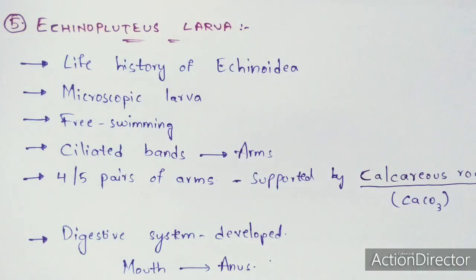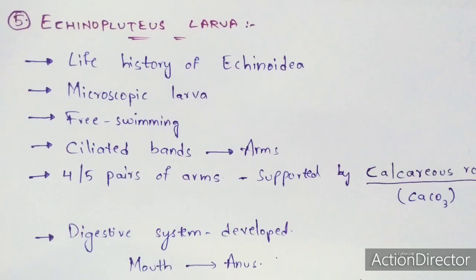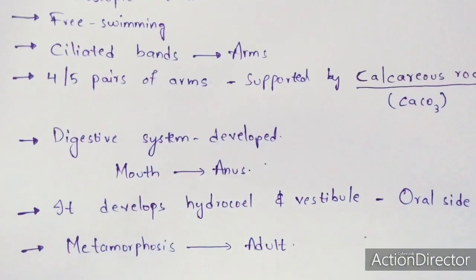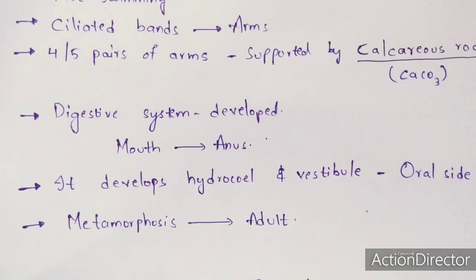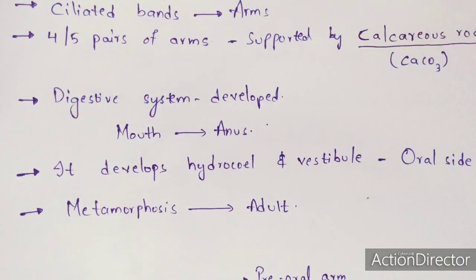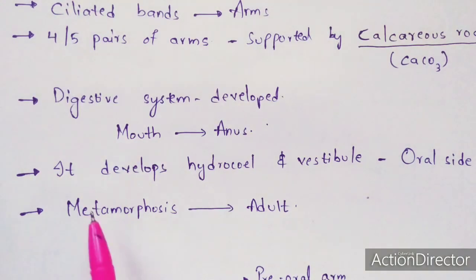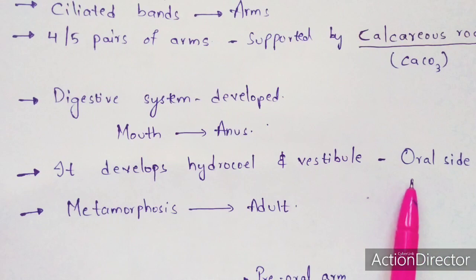The echinopluteus larva consists of four to five pairs of arms, supported by calcareous rods made up of calcium carbonate (CaCO₃). The digestive system is well developed, starting from the mouth towards the anus. As the digestive system is well developed, the alimentary canal develops a hydrocoel and vestibule at the oral side — that is, towards the mouth side.